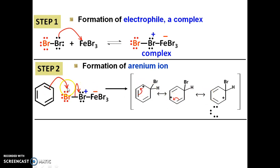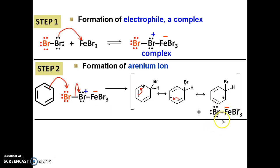When the pi bond attacks Br, the ring gains one Br and one carbon becomes positive. The electrons from the Br–Br bond go back to the other Br. So that Br now has three lone pairs: formal charge = 7 minus 1 bond minus 6 electrons = 0, so Br has no charge. Fe still has its negative charge, giving us FeBr4−.